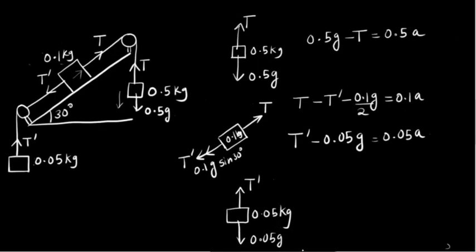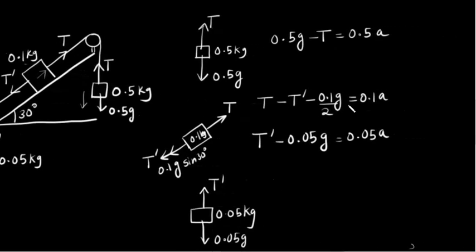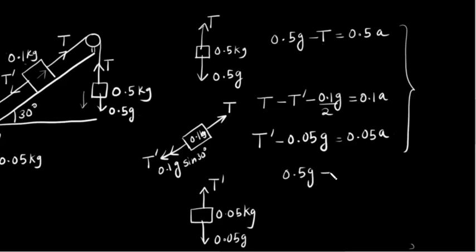Now solve for acceleration a. If we add all these expressions, we will cancel out T and T-dash and eventually get a. Adding all the expressions, we get 0.5g minus 0.1g divided by 2 minus 0.05g is equal to 0.5 plus 0.1 plus 0.05 times a, which gives 0.65a.